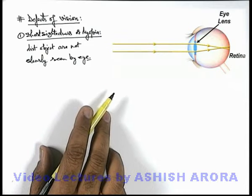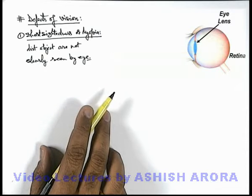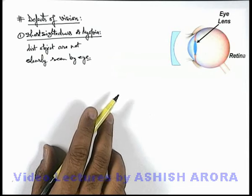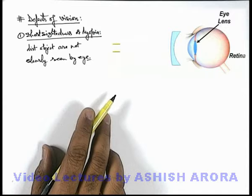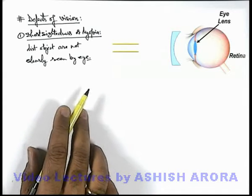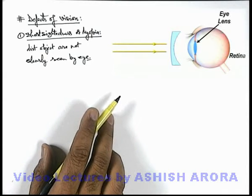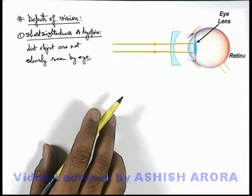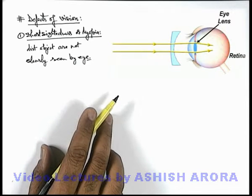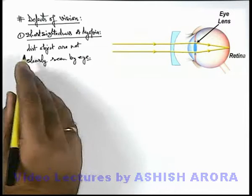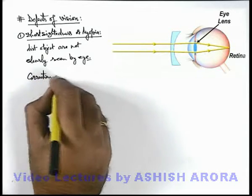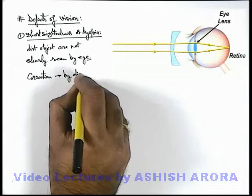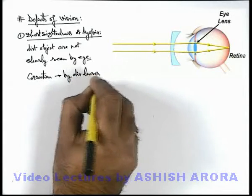Such kind of eye defect can be corrected by introducing a diverging lens in the spectacles. If we place a diverging lens in front of the human eye, then due to the combined effect of the diverging lens and the eye lens, the final image will be produced on the retina and one will be able to see the object clearly. So, myopia can be corrected by diverging lenses in spectacles.